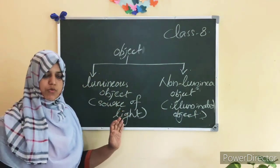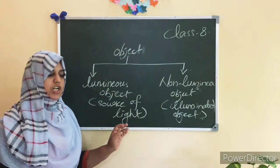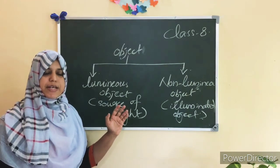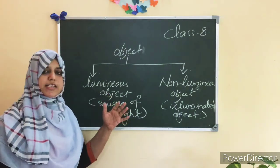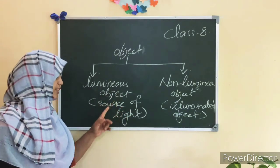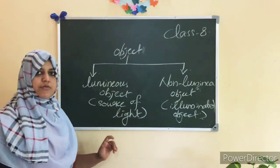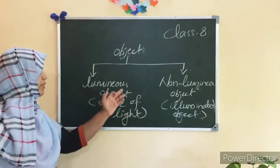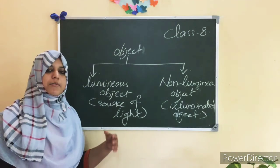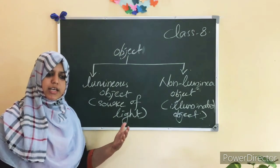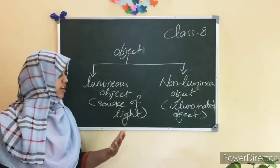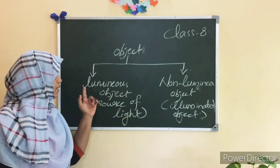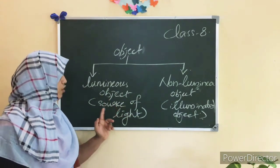What is a luminous object? Luminous object means the object which emits its own light. Objects which emit their own light are known as luminous objects or source of light. Examples of luminous objects are the sun, stars, and burning candle — they all give their own light.